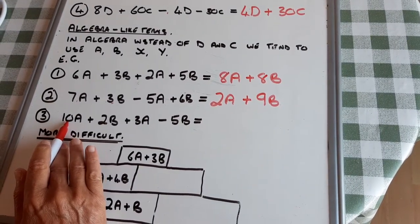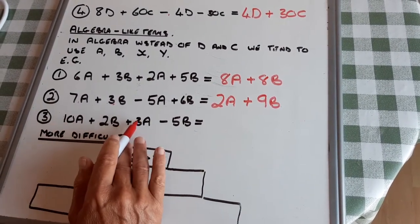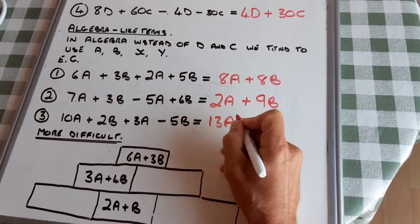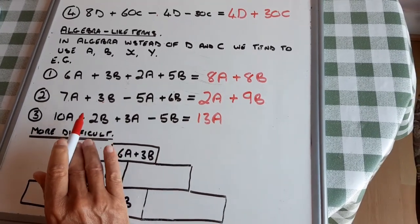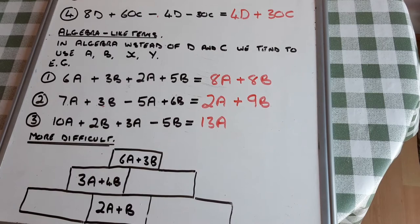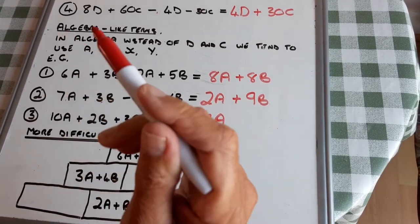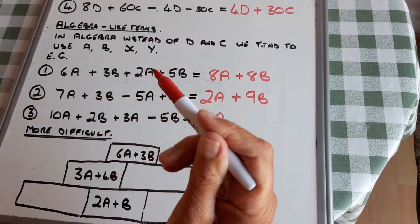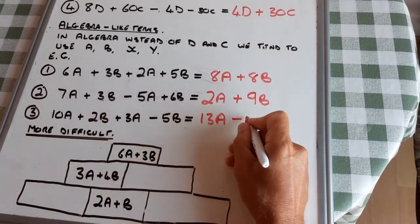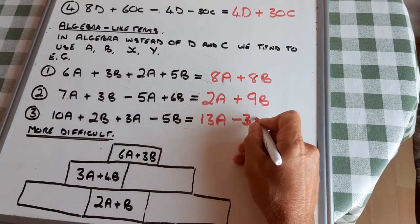10A plus 3A is 13A. 2B minus 5B. 2 minus 5 is minus 3. So that's minus 3B.